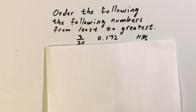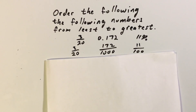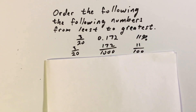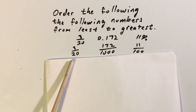Let's start off with one strategy at a time. The first strategy I'm going to use is to turn all three of the numbers into fractions. The first one is already a fraction, so I didn't need to do anything to that one.